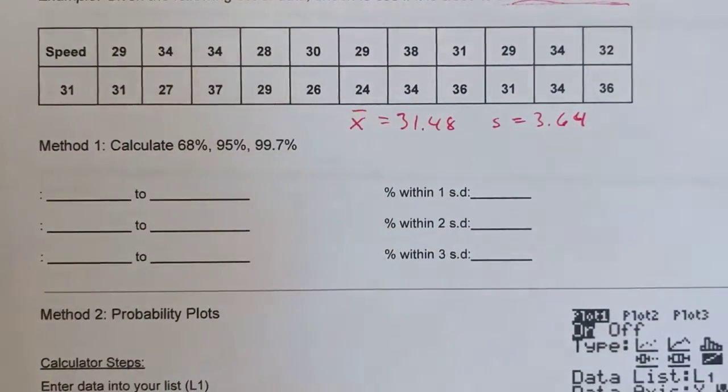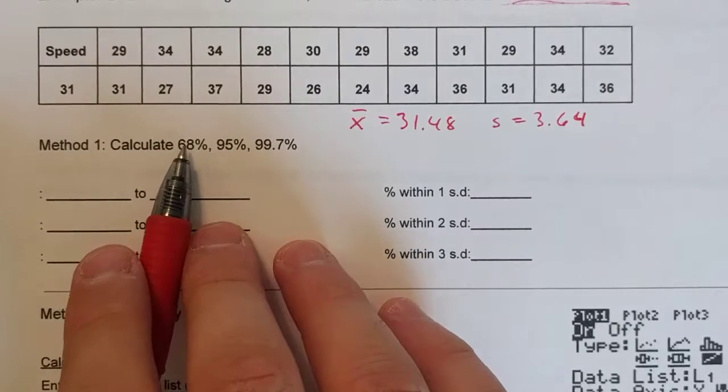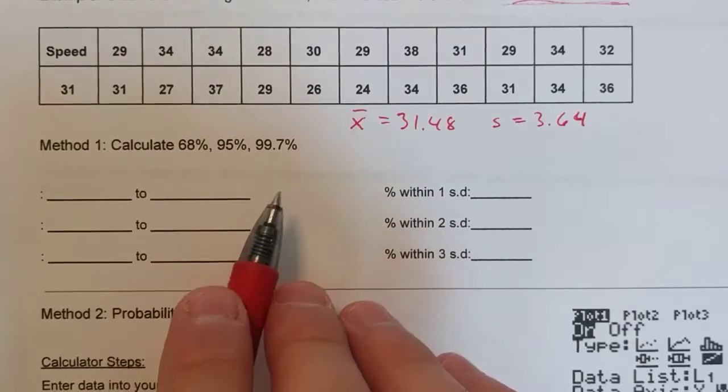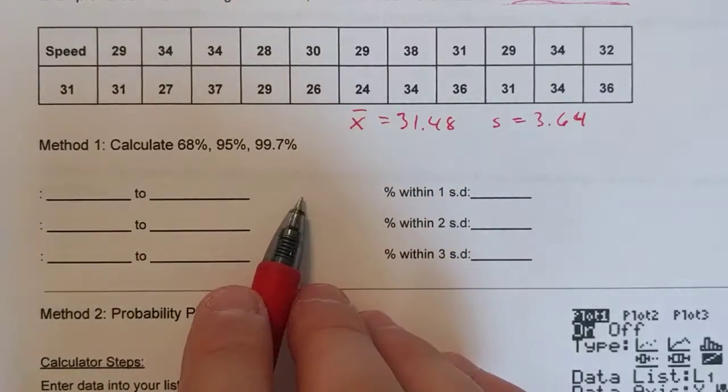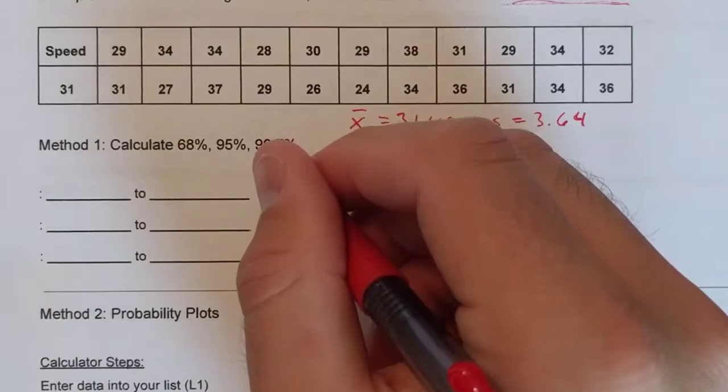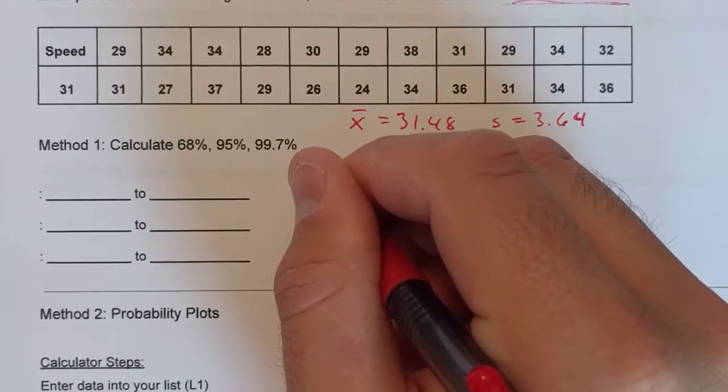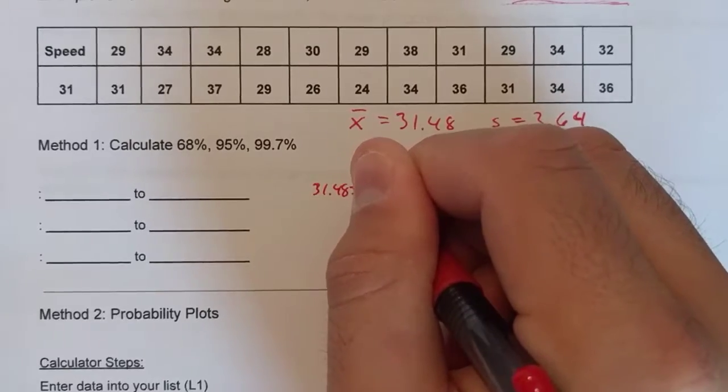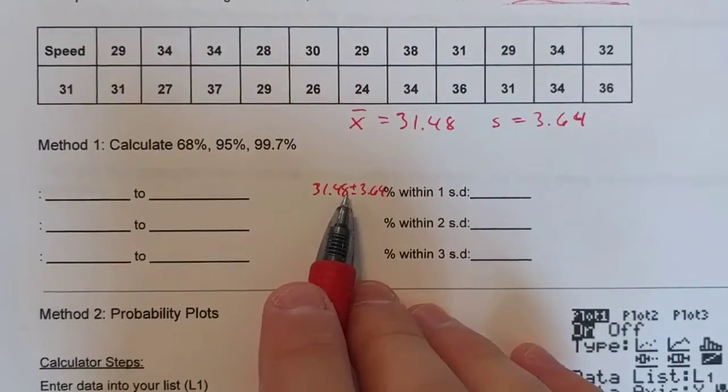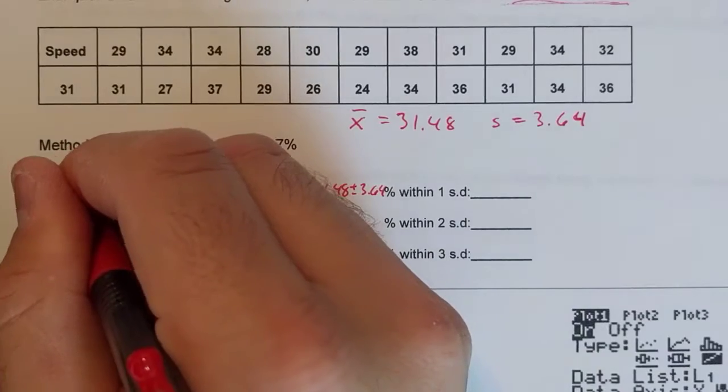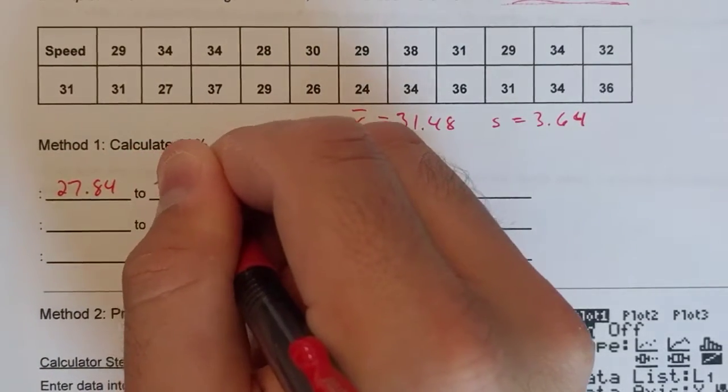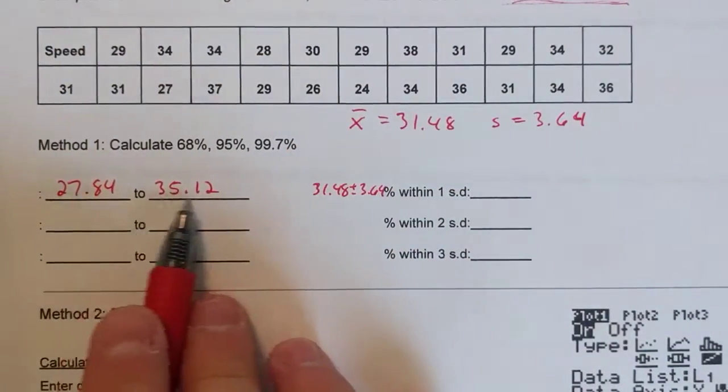We're going to figure out the windows for 1, 2, and 3 standard deviations and see how close our percentages fall to 68, 95, and 99.7 percent. So within one standard deviation of our data set we're going to do 31.48 plus or minus 3.64. So we're going to add one standard deviation and subtract one standard deviation. You get 27.84 to 35.12. That's within one standard deviation.